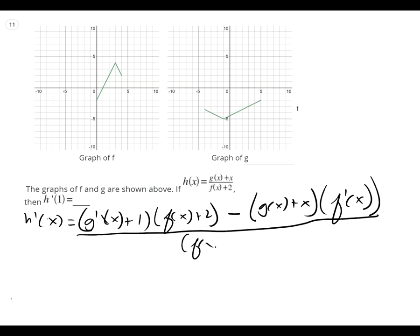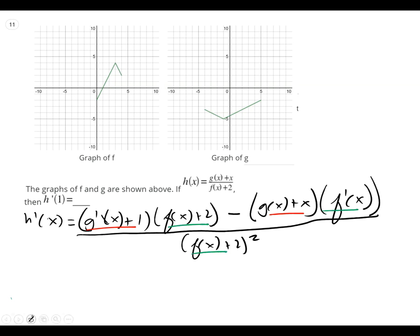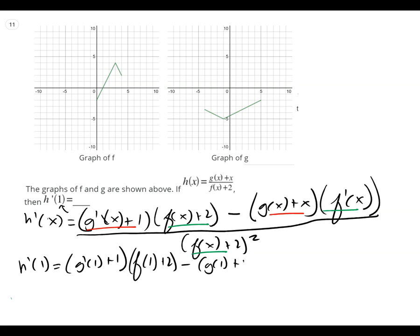So I'm going to check it: red derivative, red original, green derivative, green square. My instruction says plug in one. So, h prime of one equals g prime of one plus one, times f of one plus two, minus g of one plus one, times f prime of one, all over f of one plus two squared.